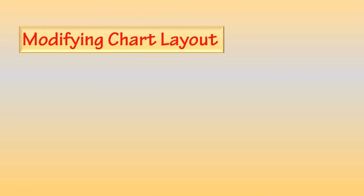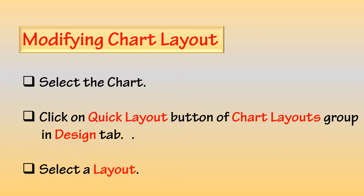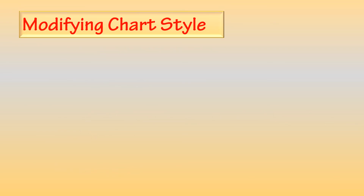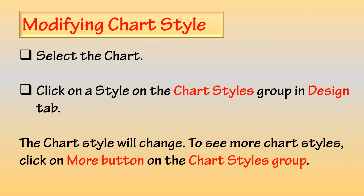Modifying the chart layout: Select the chart. Click on the Quick Layout button of the Chart Layouts group in the Design tab and select a layout. Modifying chart style: Select the chart, then click on a style in the Chart Styles group in the Design tab. The chart style will change.